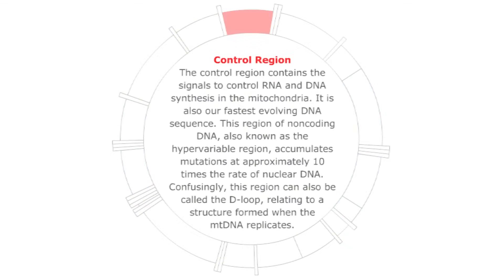The control region contains the signals to control RNA and DNA synthesis in mitochondria. It is also our fastest evolving DNA sequence. This hypervariable region accumulates mutations at approximately 10 times the rate of nuclear DNA. This region is also called the D-loop.